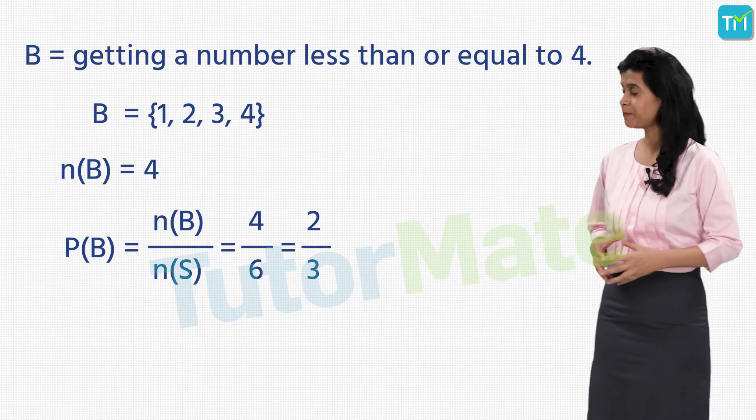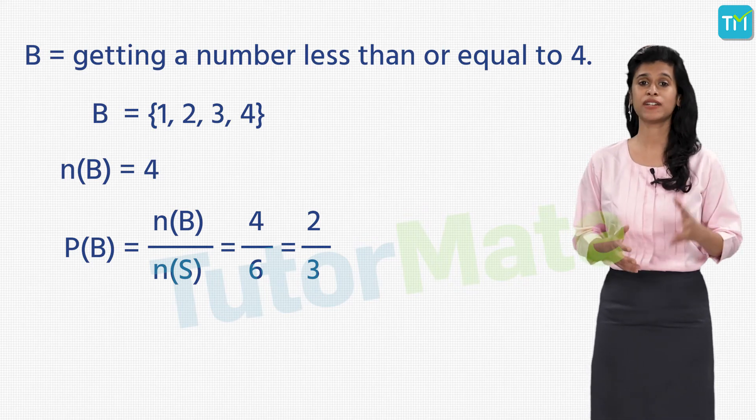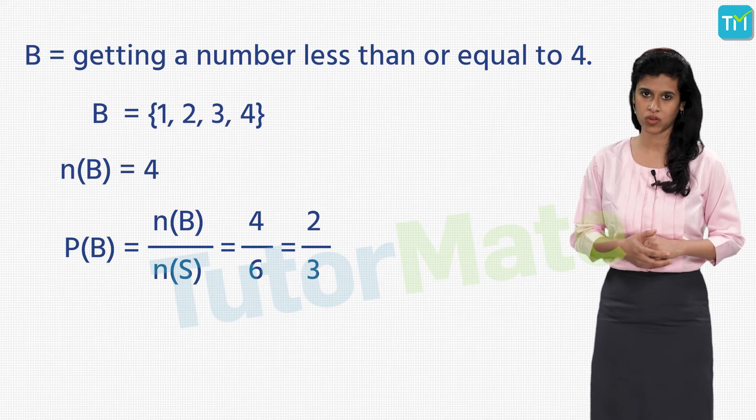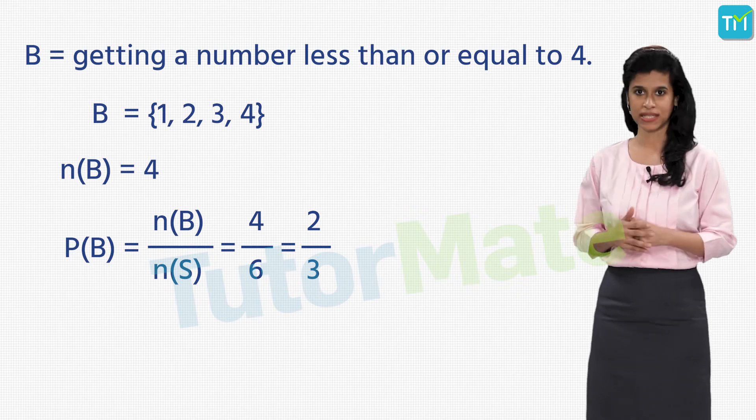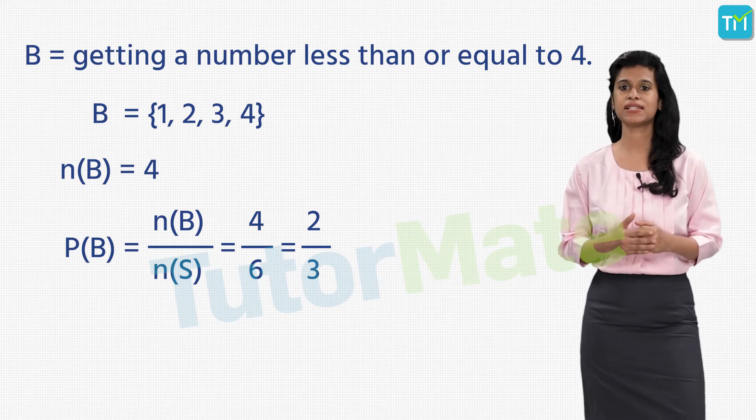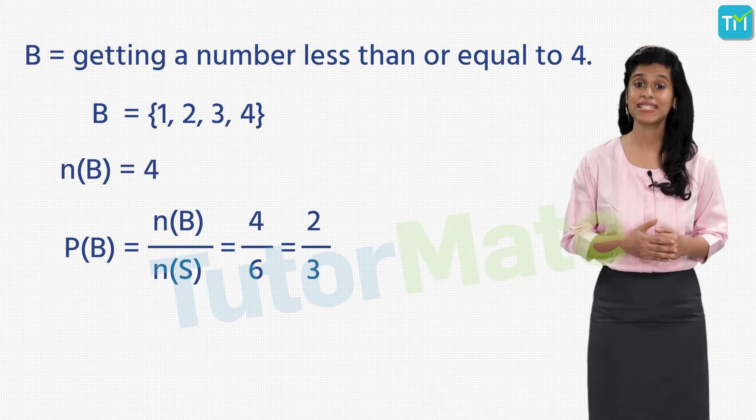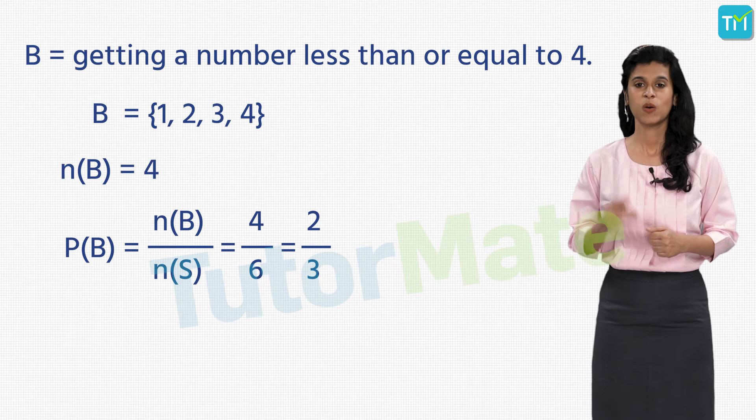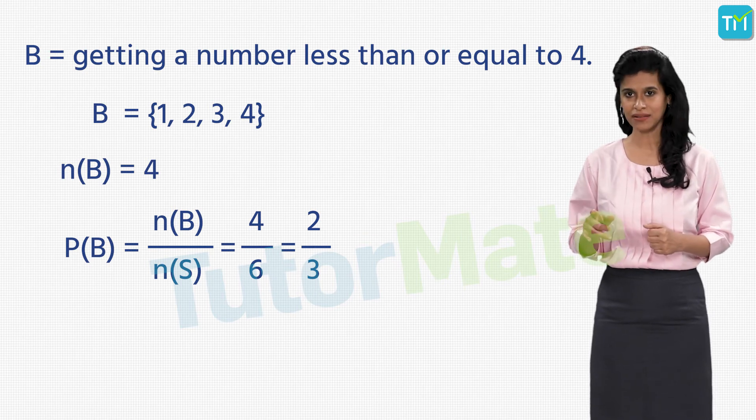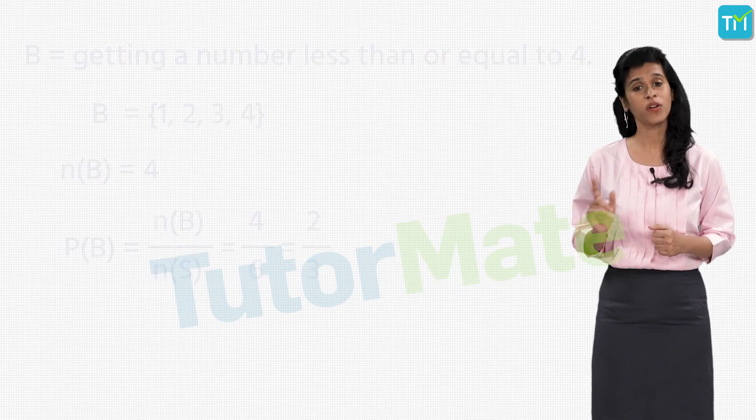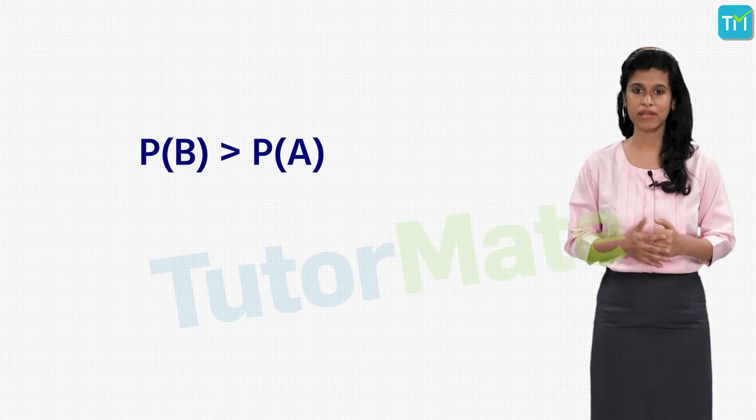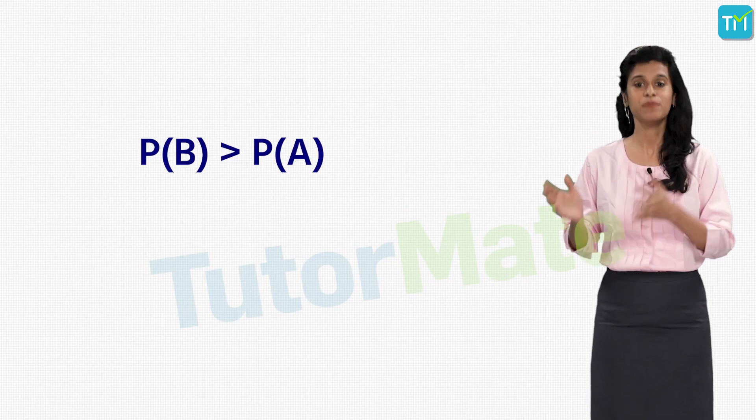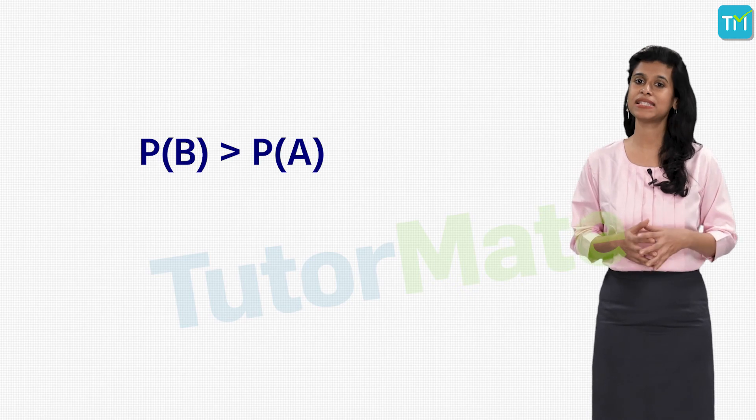So we can see that P(A), that is the probability of getting a number greater than 4, is equal to 1/3, while P(B), that is the probability of getting a number less than or equal to 4, is 2/3. Which amongst them is greater, P(A) or P(B)? Clearly P(B) is the greater one than P(A).